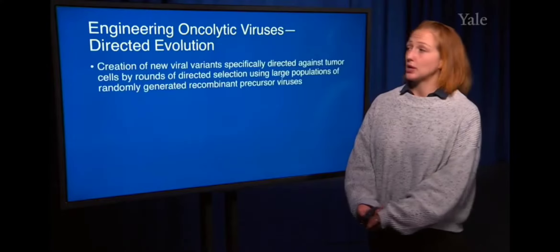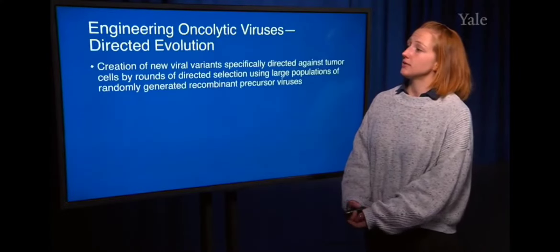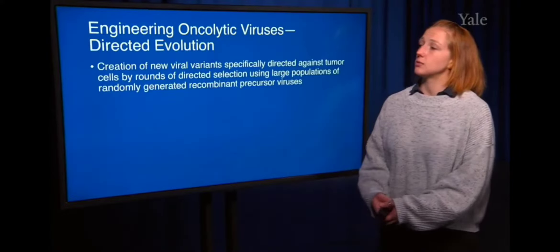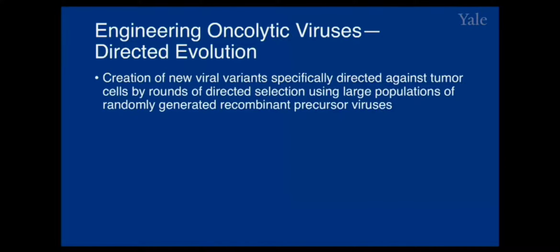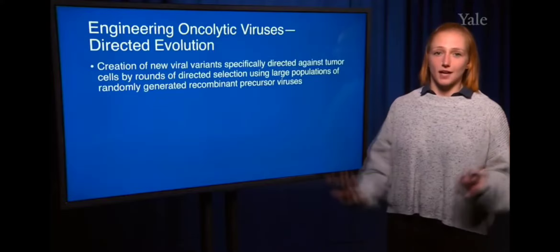First, you can use creating new viral variants specifically designed against tumor cells by rounds of directed selection using large populations of randomly generated recombinant precursor viruses. That is a lot of words, so let's break that down.